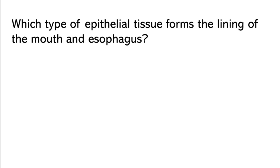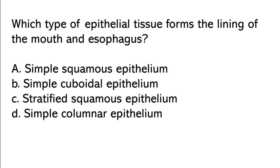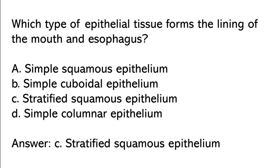Which type of epithelial tissue forms the lining of the mouth and esophagus? Simple squamous, simple cuboidal, stratified squamous, simple columnar. So the correct answer is option C: Stratified squamous epithelium.